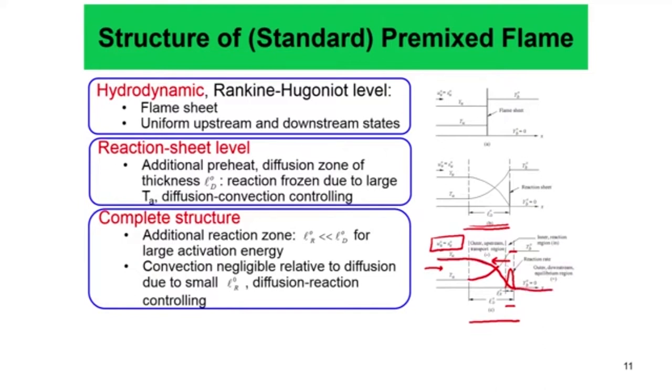Because of the large activation energy, the reaction zone is confined in a very narrow region, whereas the preheat zone is confined in a much larger region. We can find the relative thickness of the reaction zone with respect to the preheat zone.